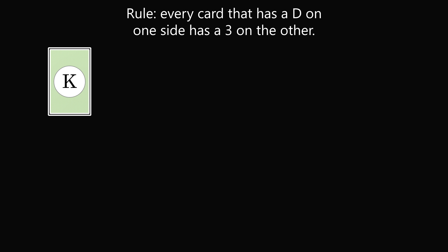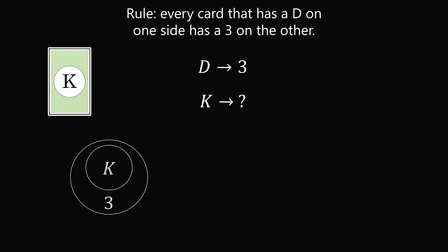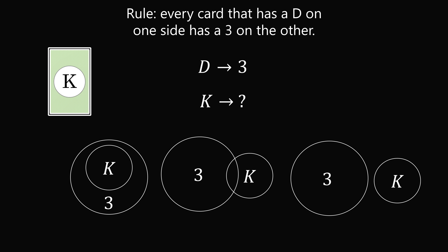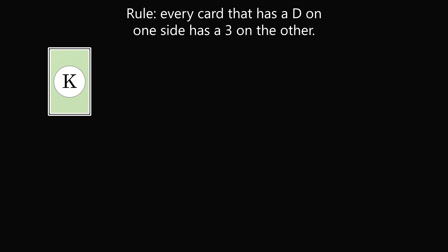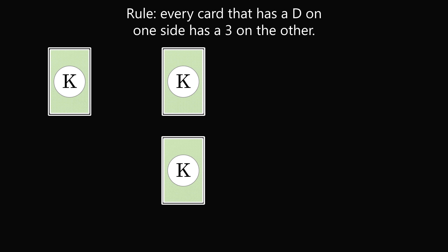What about the card with K? We know if D, then 3 — but if K, then what? We don't know. It could be that every card with a K has a 3 on the other side, or some do, or K and 3 are mutually exclusive. If we flip the K card and find a 3, that has nothing to do with the rule. And if we find a 4, that also has nothing to do with the rule. So we don't need to check the K card.